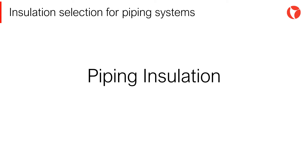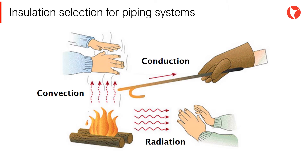Cold line insulation helps to reduce condensation on the outside of the piping system, which in turn helps to reduce corrosion. There are three types of heat transfer fundamentally: conduction, convection, and radiation. All three types act in a piping system simultaneously. However, it is usual to consider only heat conduction in the insulation element, since it normally governs the calculation.